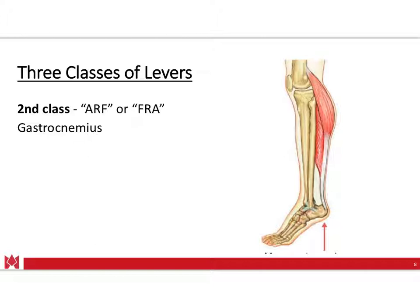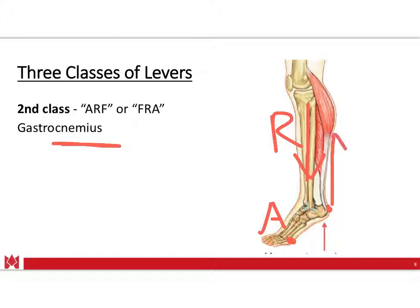A classic example in the human body is the gastrocnemius in the posterior calf. The axis for this movement is the metatarsal heads, or the ball of the foot. The leg itself provides a gravitational force downward at that location, representing the resistance. At the calcaneus, where the gastrocnemius attaches and pulls upward, you have the internal force production from the gastrocnemius, soleus, and plantaris — creating this second class lever.